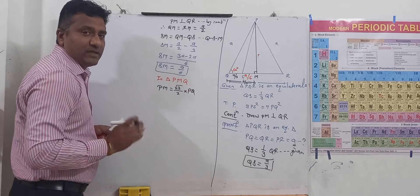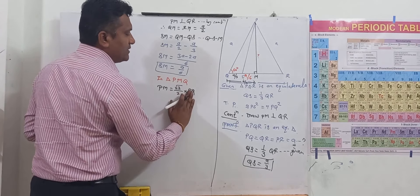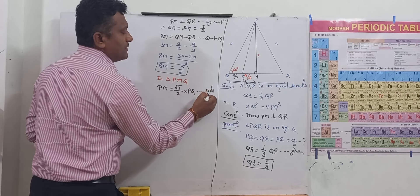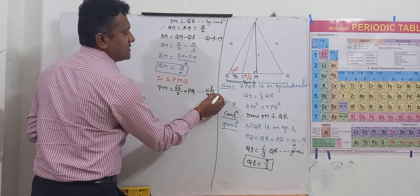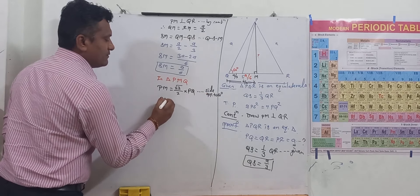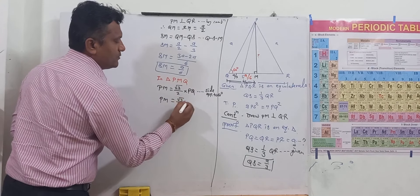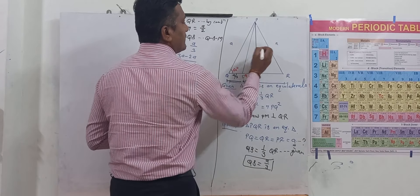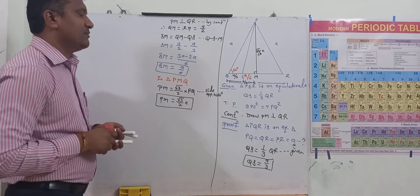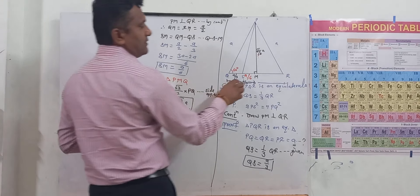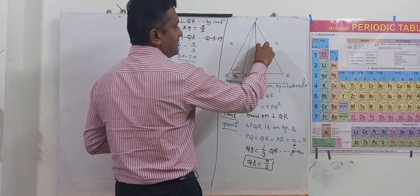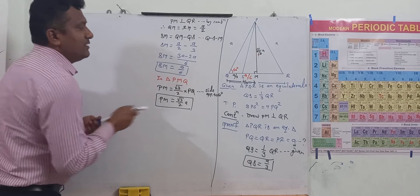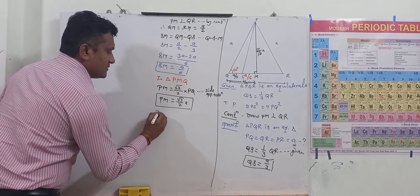Root 3 by 2 of PQ. And this PQ is nothing but what? The reason is that side opposite to 60 is PM is equal to root 3 by 2 of A. We know that this is root 3 by 2 of A. So PM is equal to root 3 by 2 of A. Now let's see, this is A by 6.